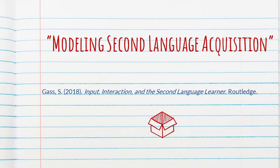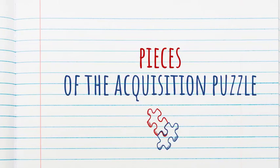In this book chapter, Susan Gass proposes a model, originally proposed in 1988, that conceptualizes the various pieces of the acquisition puzzle, as she puts it.